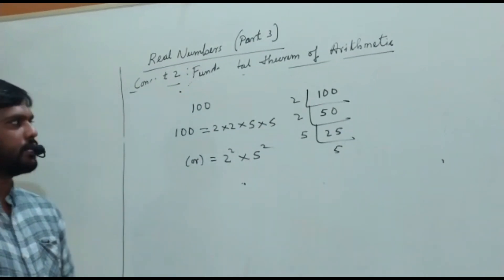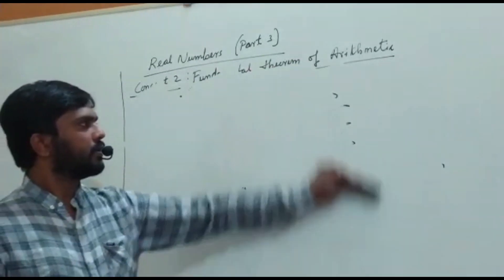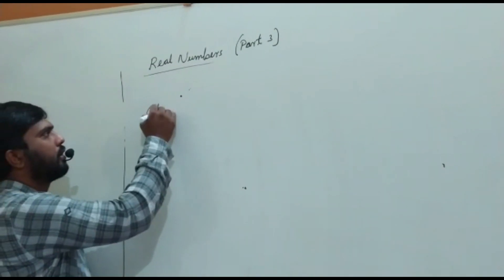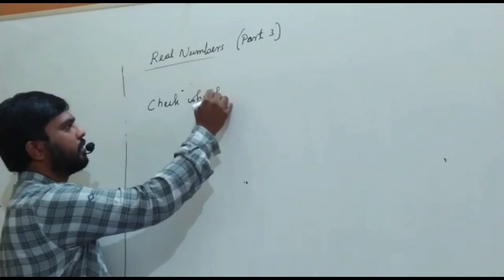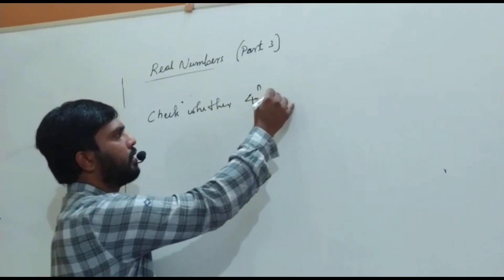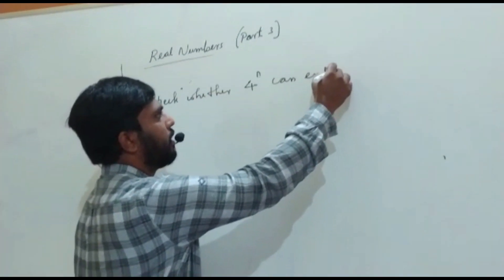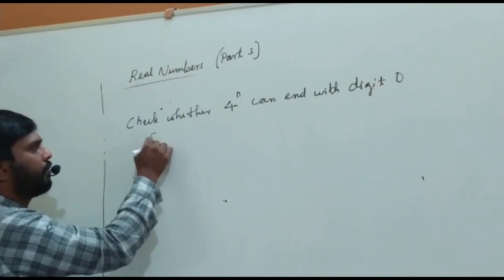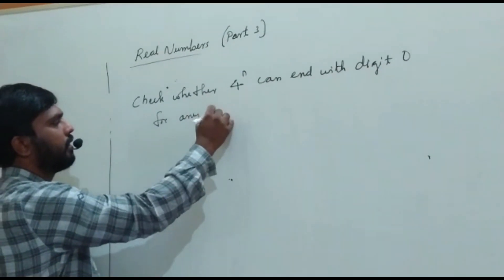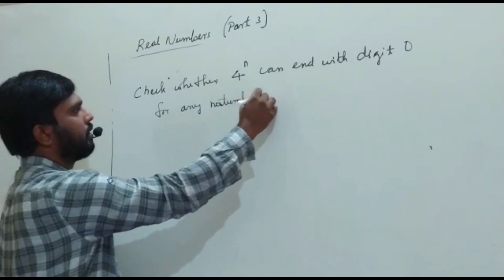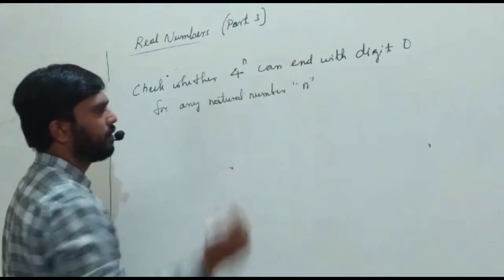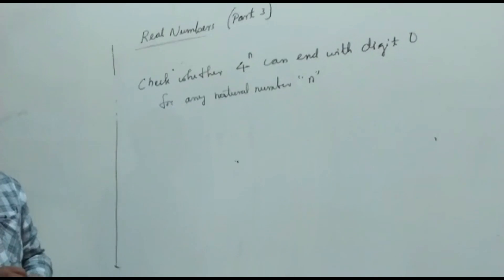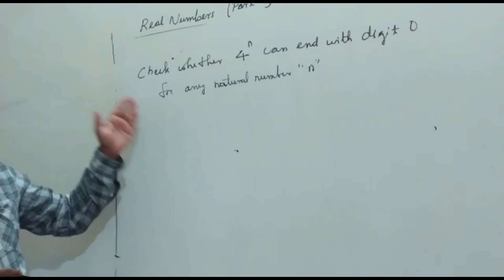So the next kind of question. What you can expect in this. Check whether 4 to the power of n can end with 0 - for any natural number, you have to check whether it will end with 0 or not.